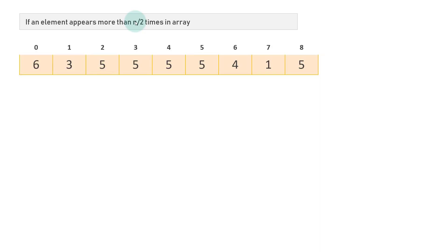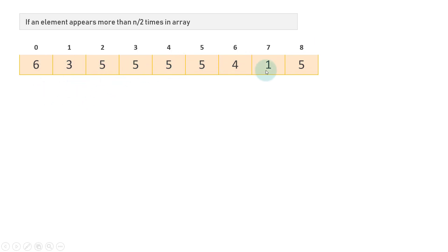Suppose we have been given this array. The size of this array is — since the last index is eight, the total number of elements is nine. So counting through, there are total nine elements.